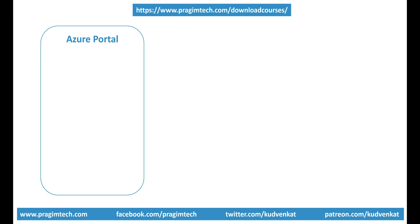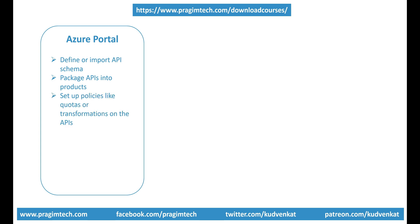We already know what is Azure portal — we've been using it throughout this course to create various Azure resources like virtual machines, app service instances, SQL databases etc. We also use it to set up and do various things related to API management. For example, using the Azure portal, we can define or import API schema, package APIs into products, set up policies like quotas or transformations on the APIs, get insights from analytics and manage users.